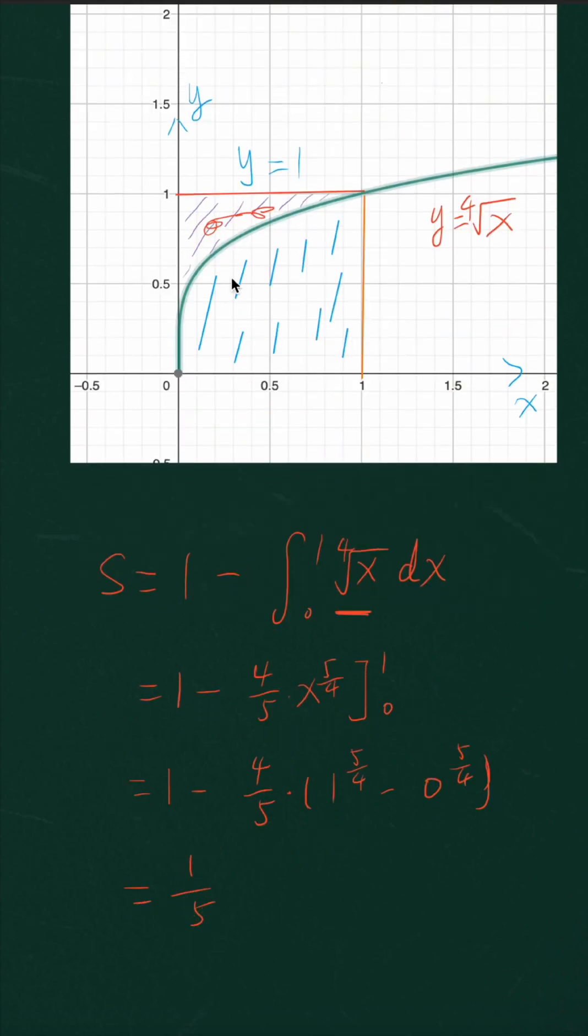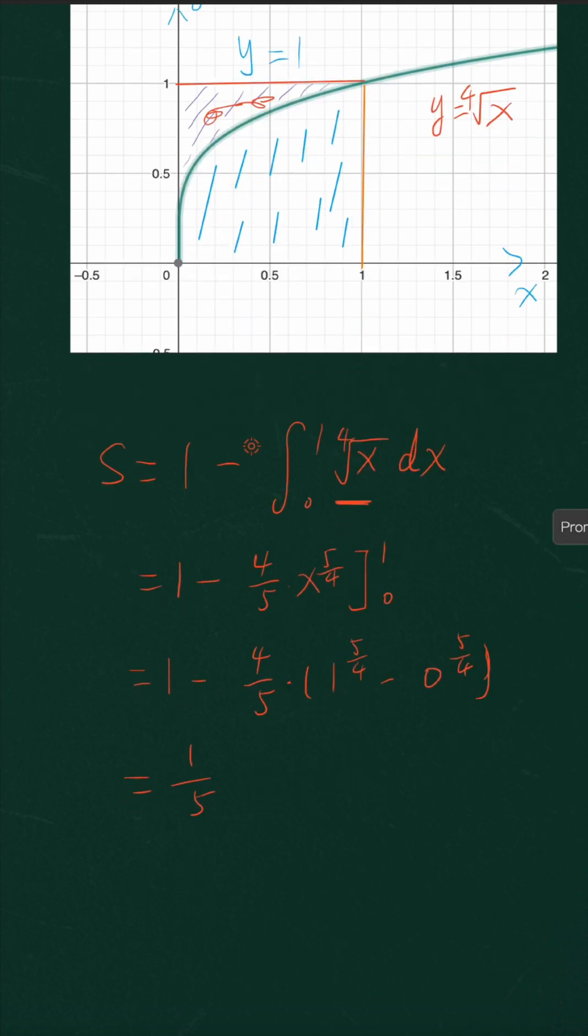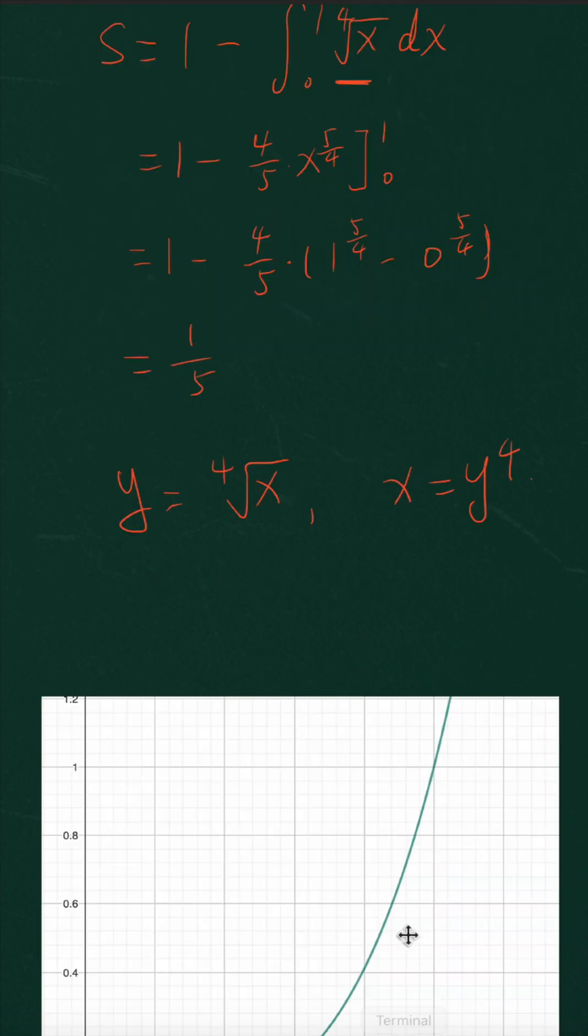Another method for us to find the area, we can try to rotate the function. Actually we can consider, so if y equals the fourth root of x, then x equals y raised to the fourth power.